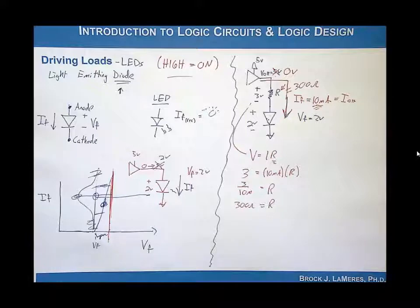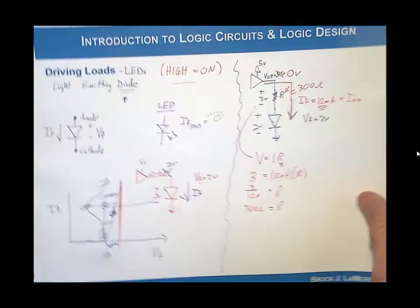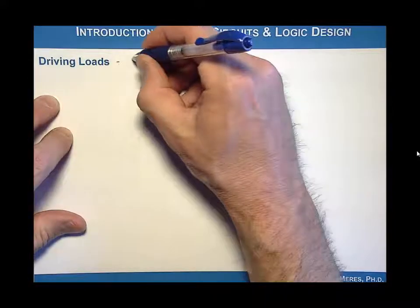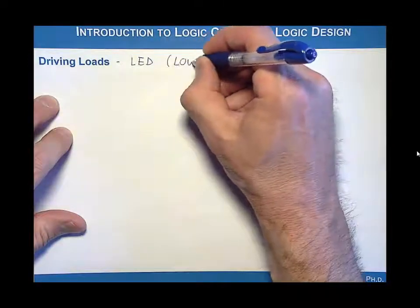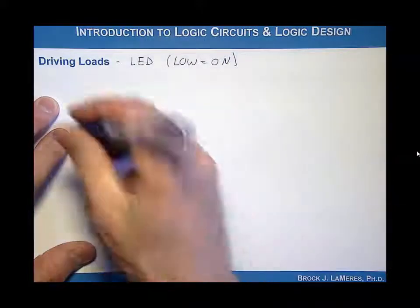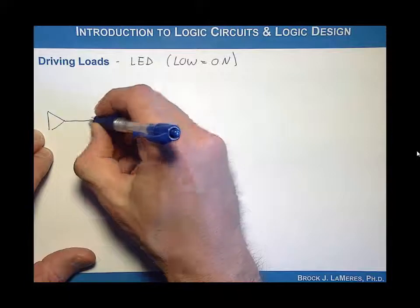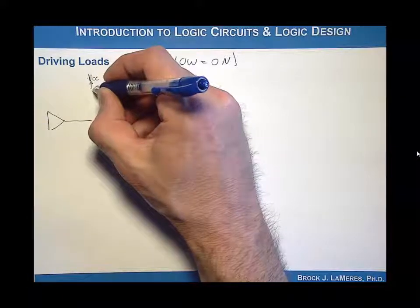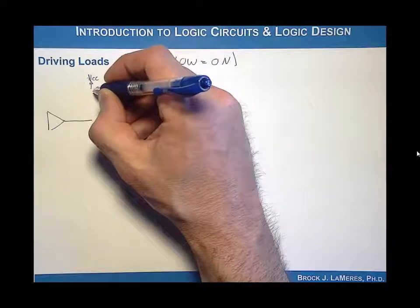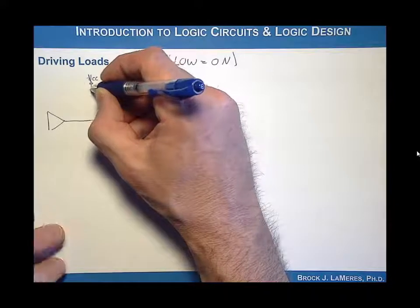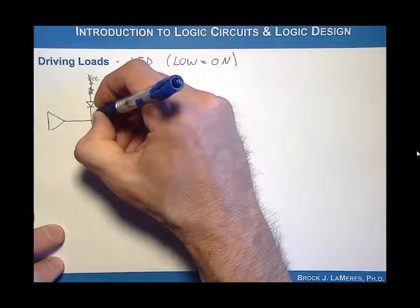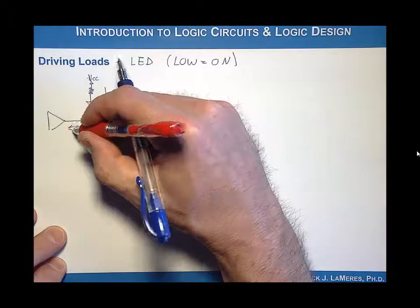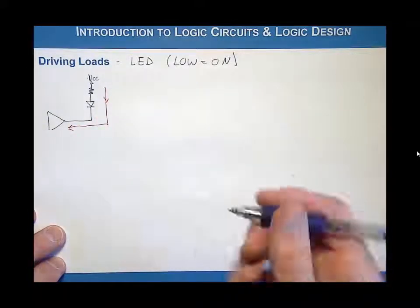Now let's look at the other case: driving an LED where a logic low equals on. The way to accomplish that is with a different topology — take your logic gate, connect VCC at the top, go through a resistor and then a diode in series, and connect the output to the gate. In this configuration, current flows from VCC through the resistor and diode and back into the output of the gate, turning on the LED.